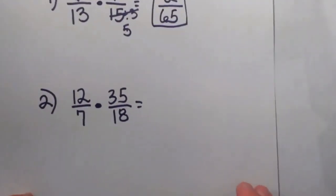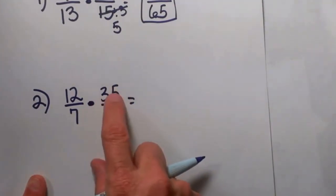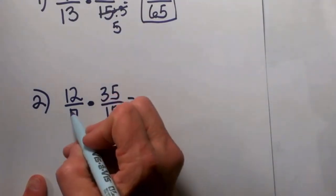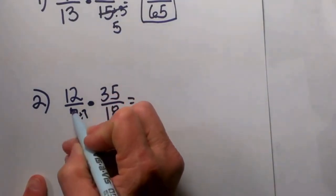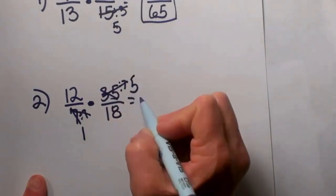Let's try another one that has some common factors. Let's look at anything in the numerator that has a common factor with a denominator. If you notice, 7 and 35—wow, 7 goes into itself and 7 goes into 35. So I can divide 7 by itself and get a 1, and I can take 35 and divide it by 7 and get a 5.